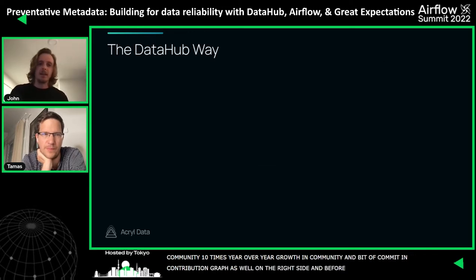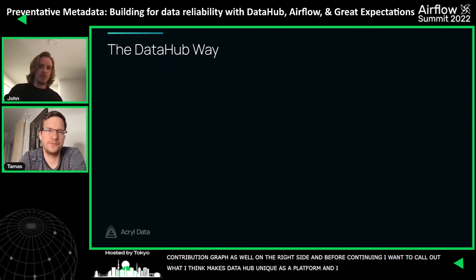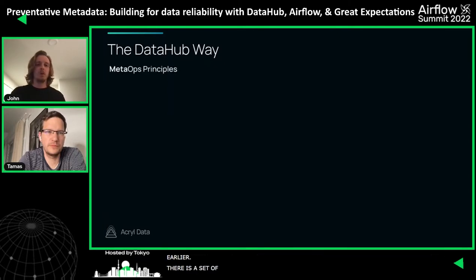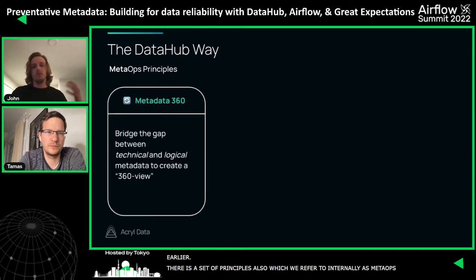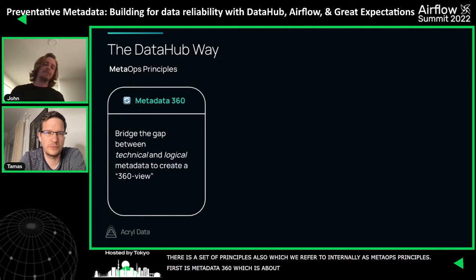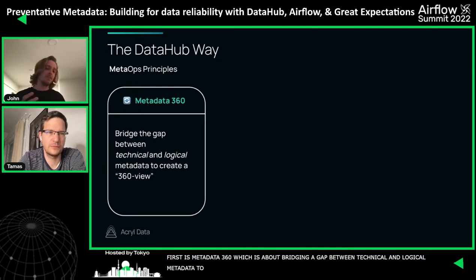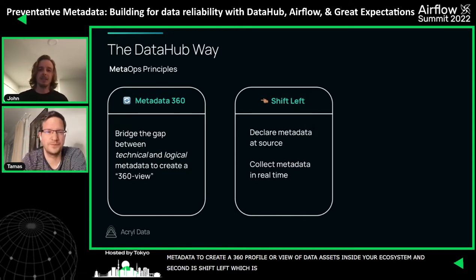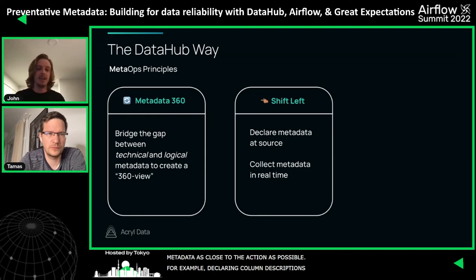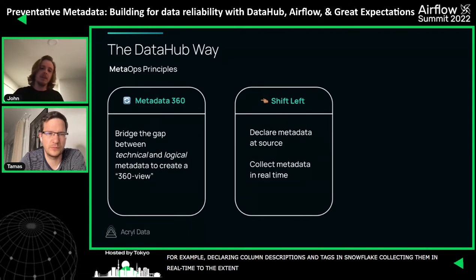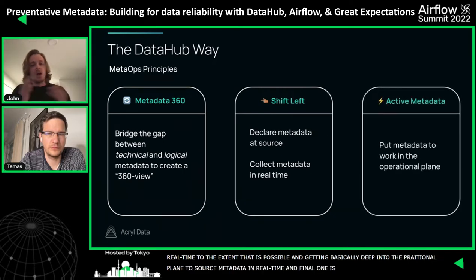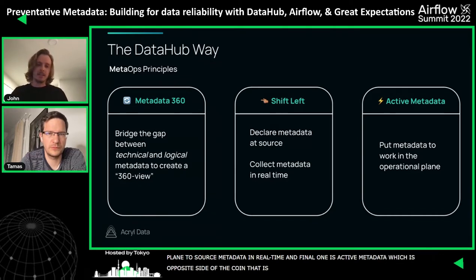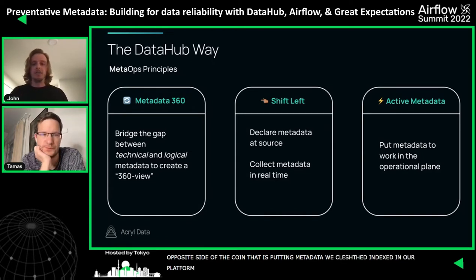Before continuing, I want to call out what makes DataHub unique as a platform. Beyond the graph aspect, there's a set of principles we call meta ops principles. The first is Metadata 360 — bridging the gap between technical and logical metadata to create a 360-degree profile of data assets in your ecosystem. The second is shift left — declaring and collecting metadata as close to the action as possible, getting deep into the operational plane to source metadata in real time. The final one is active metadata — putting metadata we've collected back to work in the operational plane, which is exactly what we'll talk about today.